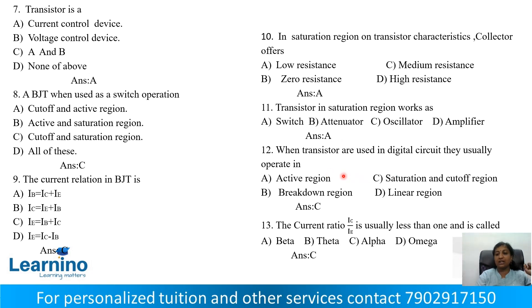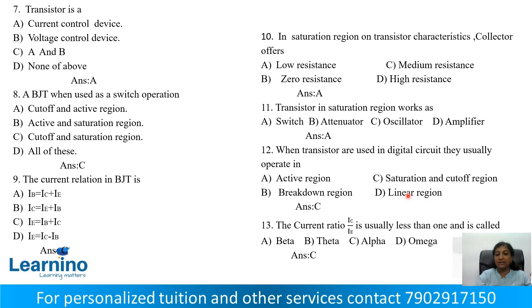Question number 13: The current ratio IC by IE is usually less than 1 and is called alpha. Option A: Beta, Option B: Zeta, Option C: Alpha, Option D: Omega. The current ratio alpha equals IC by IE. Correct answer is Option C: Alpha.